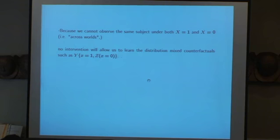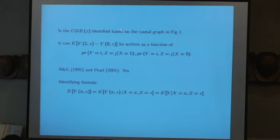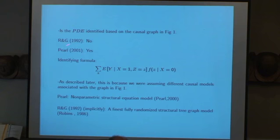So here's the, so the controlled direct effect CDE at z, the direct effect, is an intervention parameter. Is it identified based on the causal graph in figure one? Can this guy be written as a function of the observed factual probabilities? And the answer by both me and Sander Greenland and Judah is yes, and here's the identifying formula. Effective intervention, no problem. Is the PDE identified based on the causal graph in figure one? Sander and I said no. Judah said yes, and he gave the identifying formula. Notice this only depends on the distribution of the factuals that we actually see.